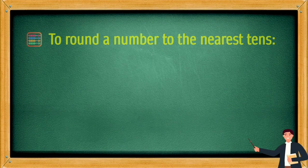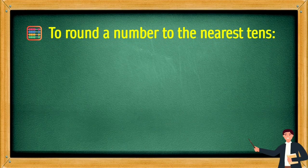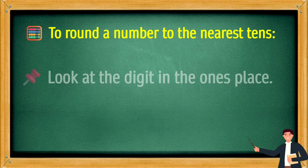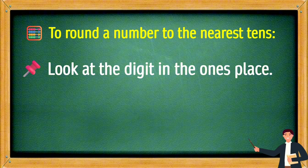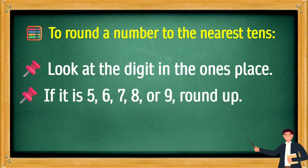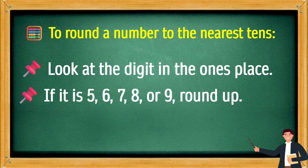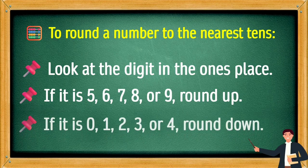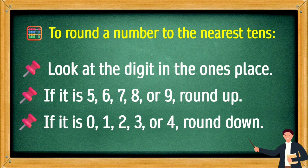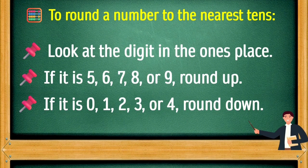To round a number to the nearest tens, look at the digit in the ones place. If it is 5, 6, 7, 8, or 9, round up. If it is 0, 1, 2, 3, or 4, you should be rounding down.